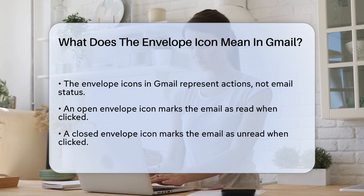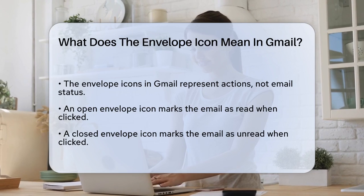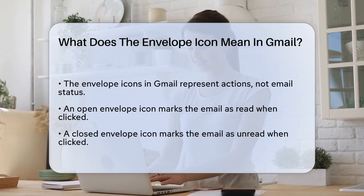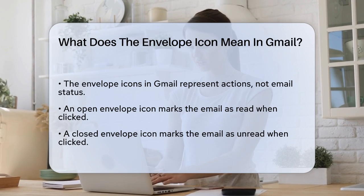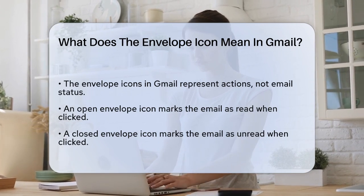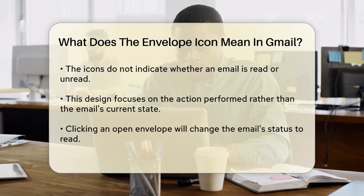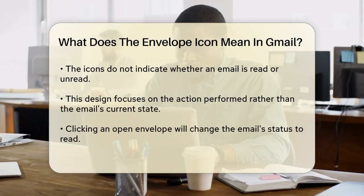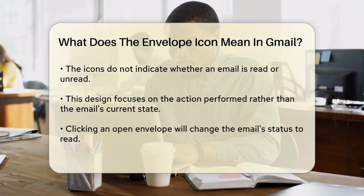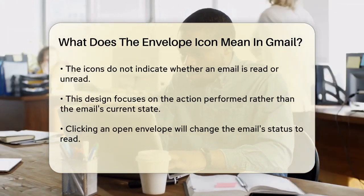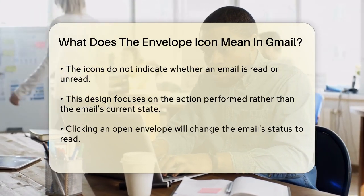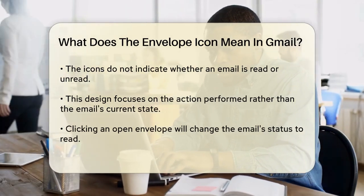In Gmail, the envelope icons don't directly indicate the status of your emails in the way you might think. Instead, these icons represent the actions you can take on your emails. When you see an open envelope icon, it doesn't mean the email is unread or read — it actually means that clicking on this icon will mark the email as read.